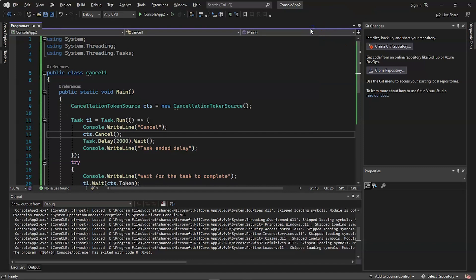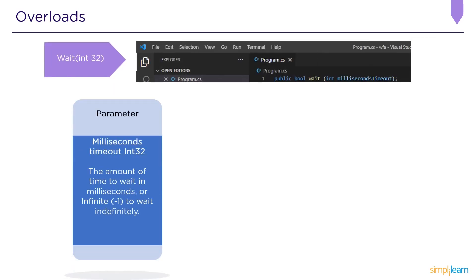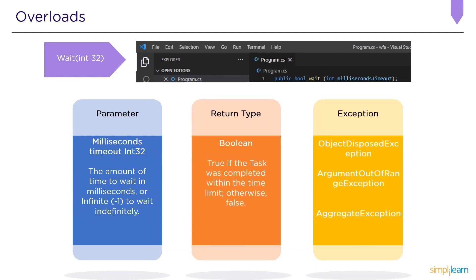Now let's look at the third overload of C# Wait, which is Wait(Int32). The parameter is millisecondsTimeout (Int32), defined as the amount of time to wait in milliseconds, or minus one to wait indefinitely. The return type is boolean, returning true if the task completed within the time limit, otherwise false. Exception handling includes ObjectDisposedException and ArgumentOutOfRangeException when milliseconds timeout is a negative number other than minus one.